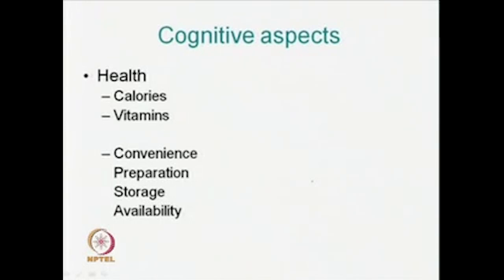Scholars like Finkelstein divide food practices into a couple of aspects. The first is the cognitive aspect. Cognitive, as you know, refers to attention, memory, and perception. The cognitive aspects of food include health, calorie consumption, vitamins, the convenience of preparing food, different ways of preparation, and storage. These are the cognitive aspects of food preparation.